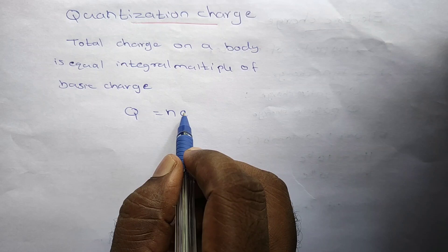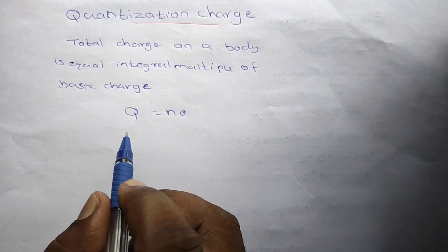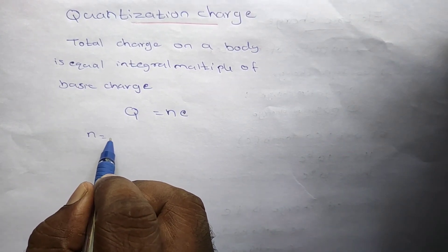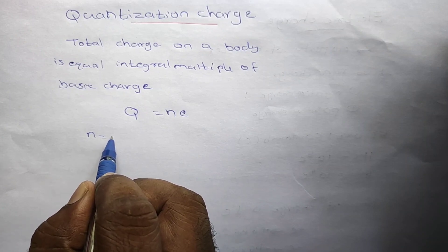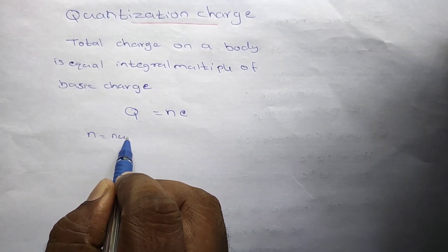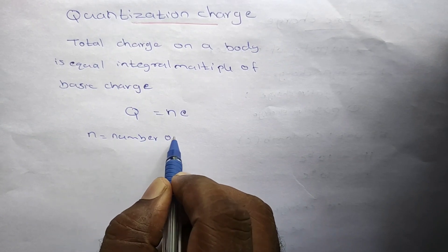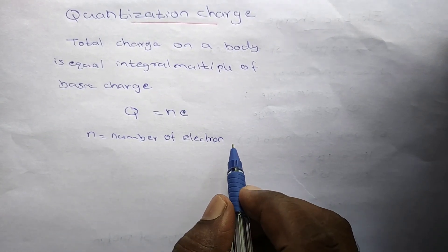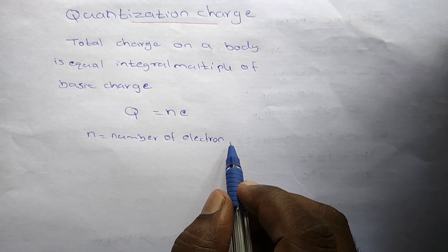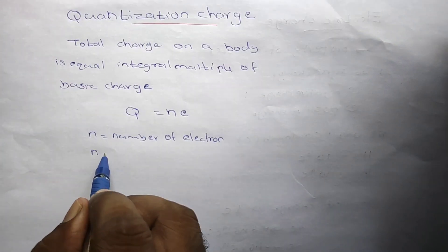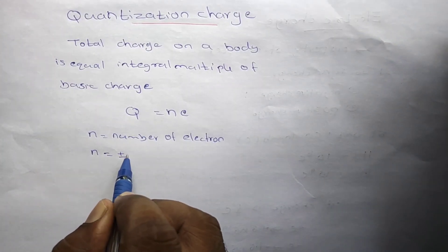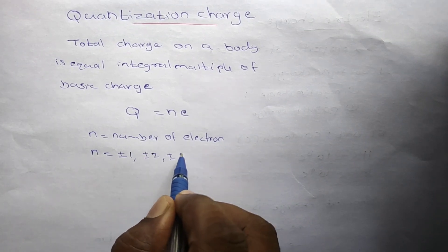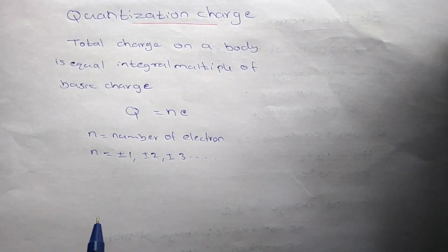What is n? n is the number of electrons gained or lost. Its value is an integer — that is equal to plus or minus 1, plus or minus 2, plus or minus 3, and so on.